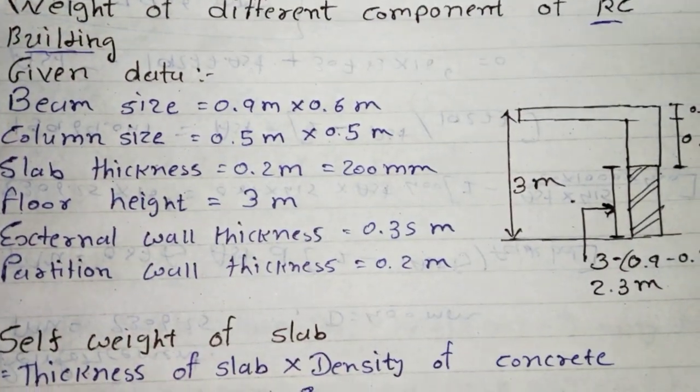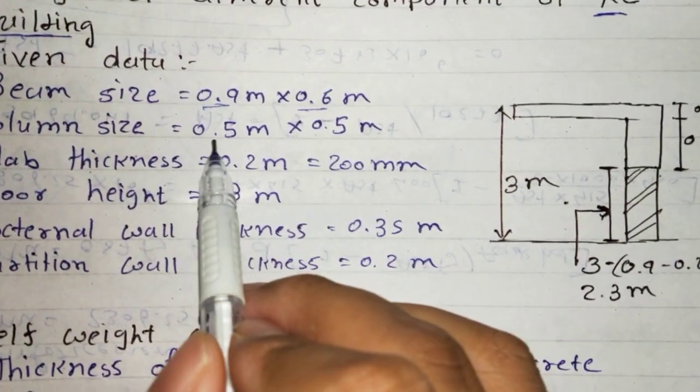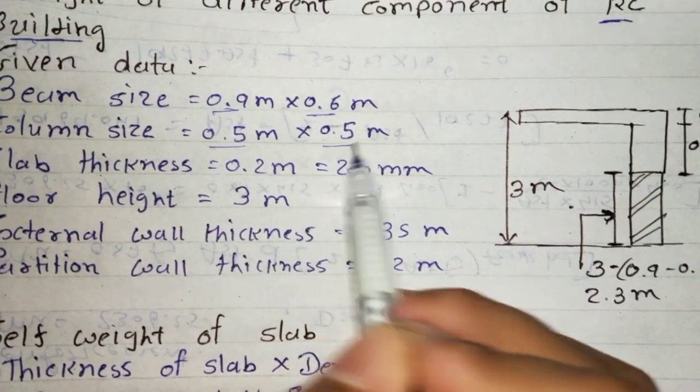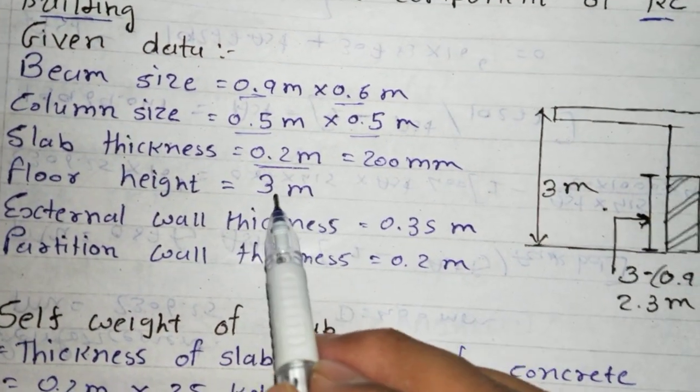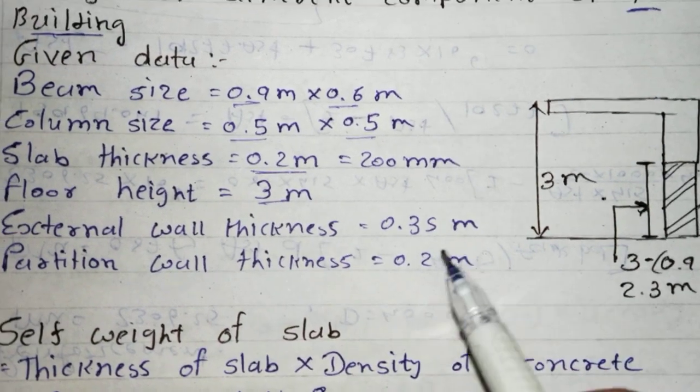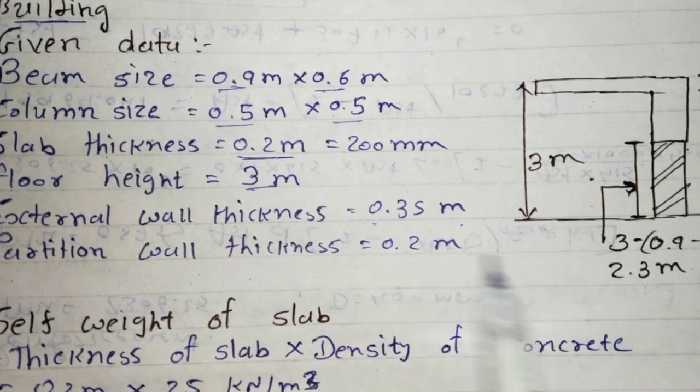Given data: beam size 0.9 x 0.6 meter, column size is 0.5 x 0.5 meter, slab thickness is 0.2 meter, floor height is 3 meter, external wall thickness is 0.35 meter, and partition wall thickness is 0.2 meter.